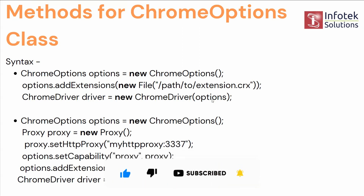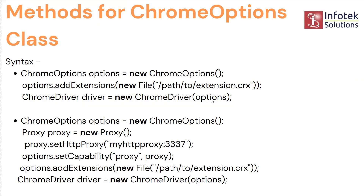In a second syntax, proxy-related details can be seen. These details we can't add straight away to our code using Selenium WebDriver, so Chrome Options comes into use. Using the Chrome Options object, we add all the required files or details. Once all are added, we then pass those options to our Chrome Driver constructor. That's the use of Chrome Options in Selenium — we'll see more examples below.